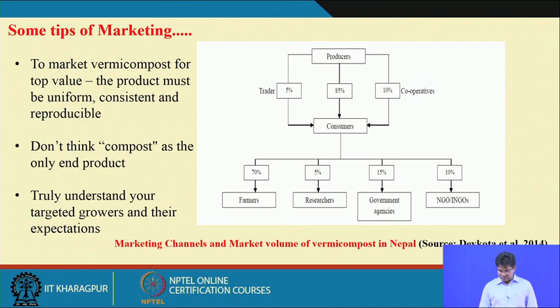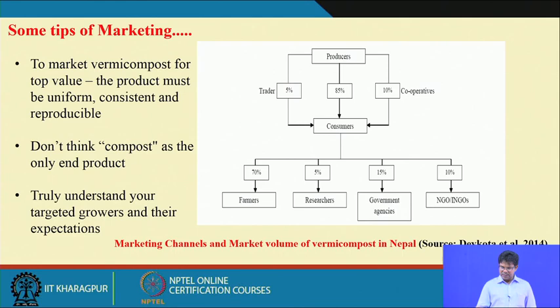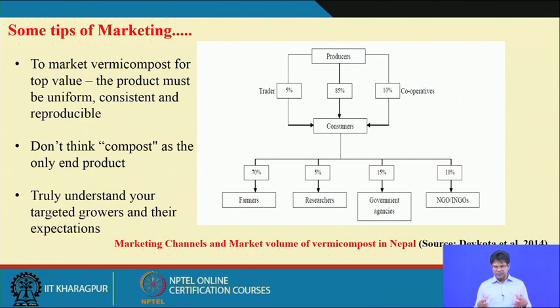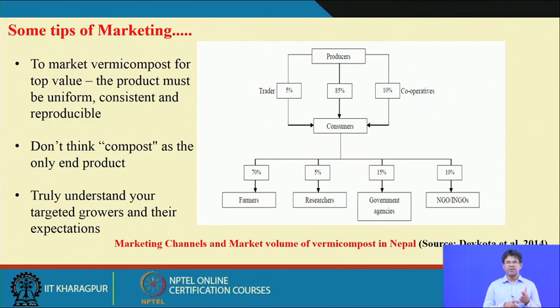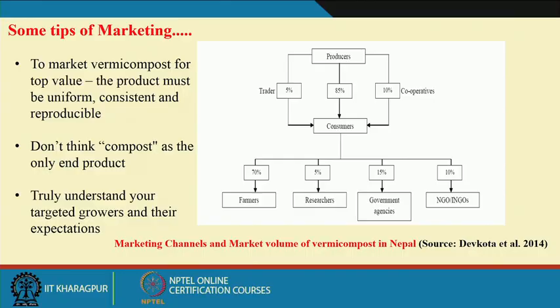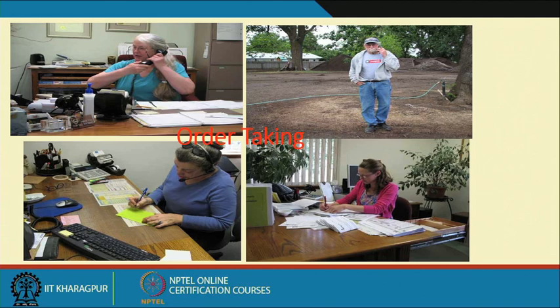Looking at the marketing channel model from Nepal: producers link 85% of their production directly to consumers, with only 15% going to traders and cooperatives. This direct contact between producer and consumer is key. By targeting a group of farmers, understanding what crops they grow — whether rice growers or vegetable growers — you can determine what type of compost is needed and whether enrichment can enhance quality to directly meet farmer requirements.